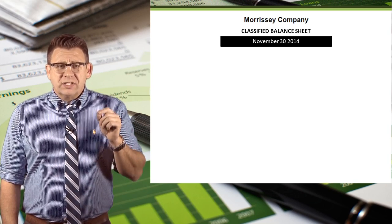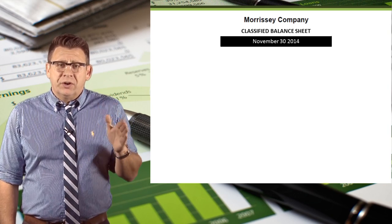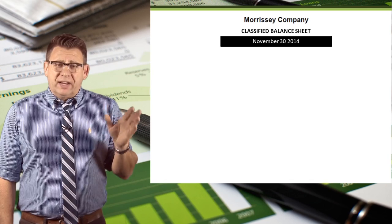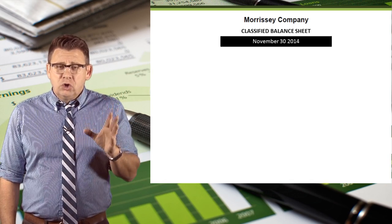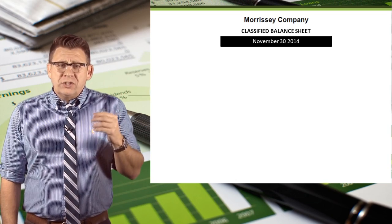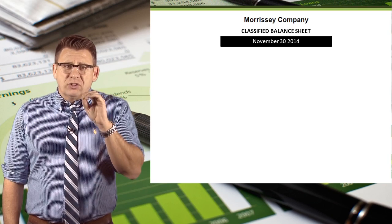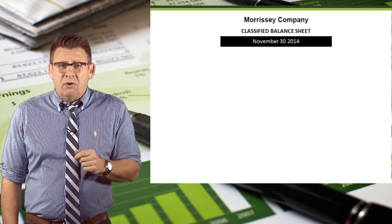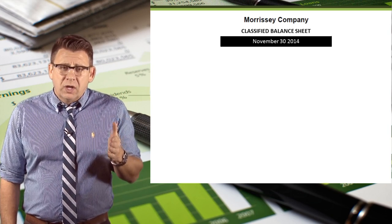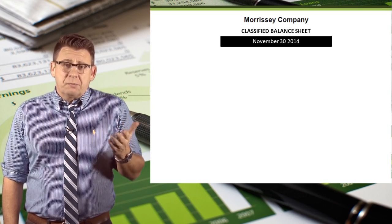The balance sheet reports assets, liabilities, and equity for a point in time rather than a period of time. This is because investors and creditors want to know the financial position today, not some accumulated amount that has no meaning. For example, which is more relevant to financial decision making: how much money you have right now, or how much money you've had over your entire life? Certainly what you have now is the only thing that would impact a future financial decision like buying a home.